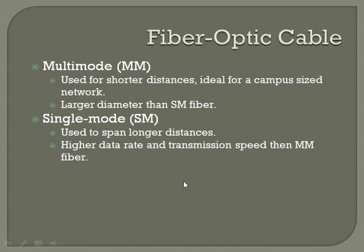Fiber optic cable comes in two flavors: multimode and single mode. Questions on fiber optic cable on the CCNA exam are very minimal. Multimode is used for shorter distances and is ideal for a campus-sized network — meaning multiple buildings in a large facility, like a Samsung or Dell campus — and has a larger diameter than single-mode fiber. Single mode is used to span longer distances and has a higher data rate and transmission speed than multimode.